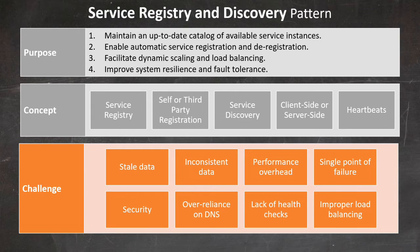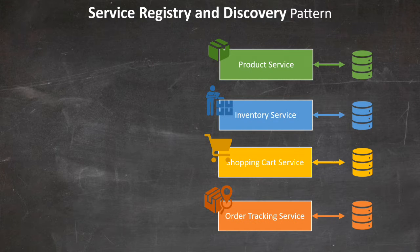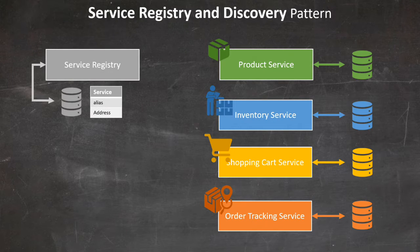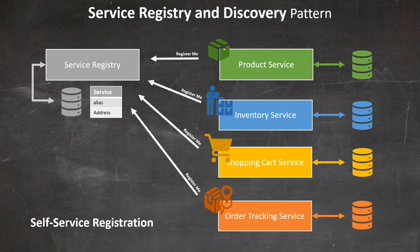Now let's see how to implement this pattern. As you understand, there are two components: the service registry and the service discovery. Let's start with our four sample microservices and add to this initial picture our service registry. The service registry relies on a database which stores information on the microservices available within the ecosystem of a solution. How does a service registry work? There are two alternatives. The first depends on self-service registration: at startup, each microservice registers itself to the registry, and when shutting down, each microservice de-registers.